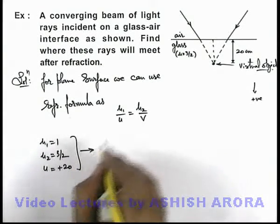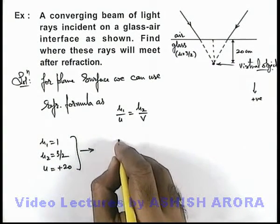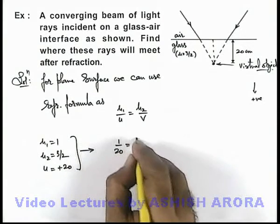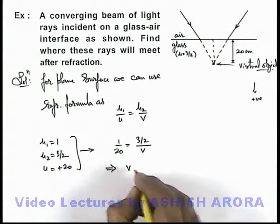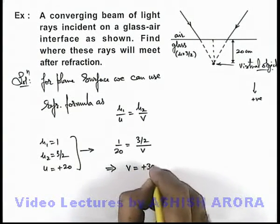And if I substitute the values here, you can see we are getting 1 by 20 is equal to 3 by 2 upon v, and on simplifying we are getting the value of v to be plus 30 centimeters.